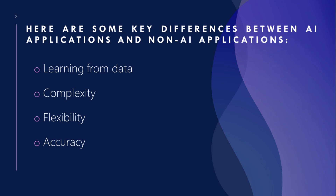Accuracy: AI applications can often provide more accurate results than non-AI applications because they can learn from data and adjust their behavior accordingly. Overall, the key difference between AI applications and non-AI applications is the ability of AI applications to learn and adapt from data,